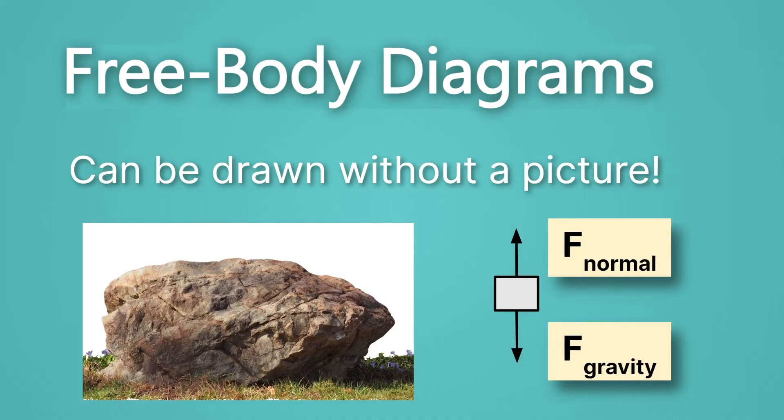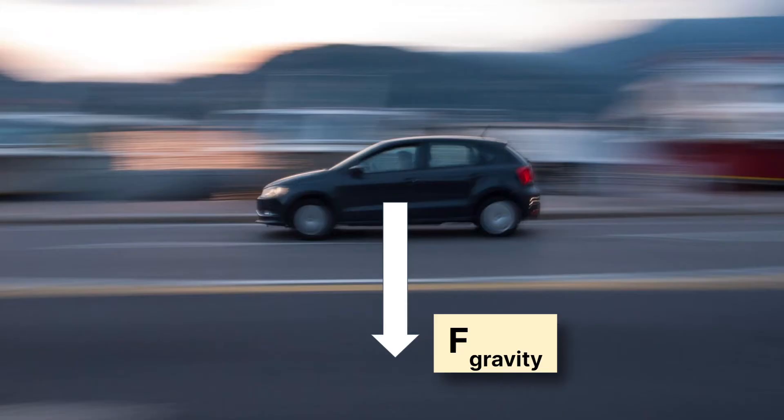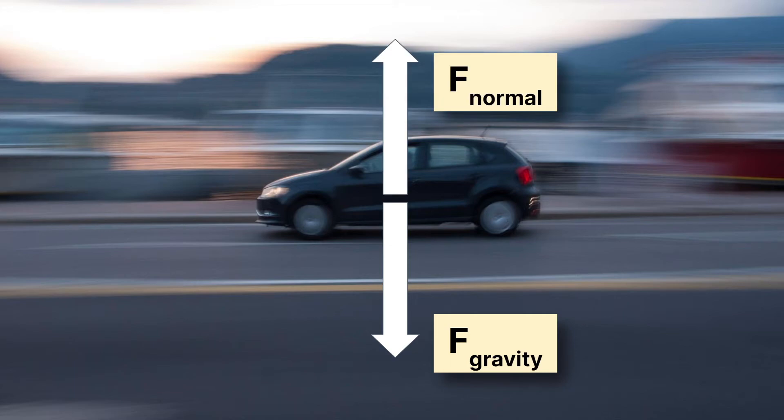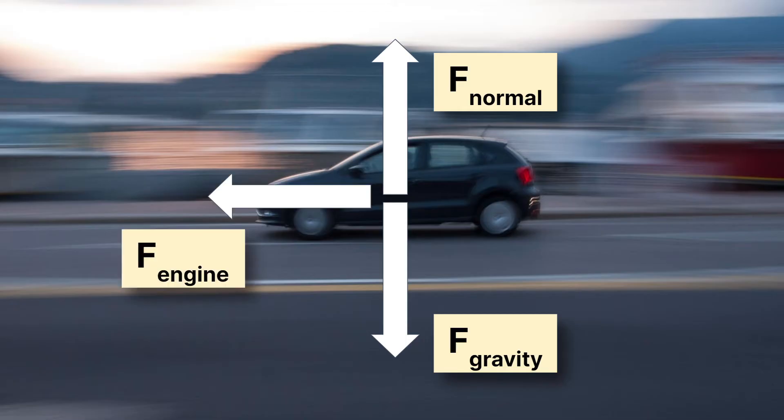Let's do another free body diagram. Here, we have a car. It gets a little more interesting than the rock, right? So the force of gravity is here, as we might expect. What's going to be opposing the force of gravity? You guessed it. The normal force. That normal force is opposing the force of gravity. Okay. Now, what else is going on here? What other thing in this picture is generating a force? Well, you might realize, oh, you know what? The car is. The car has an engine in it. And that's exactly right. We can call this the force of the engine.